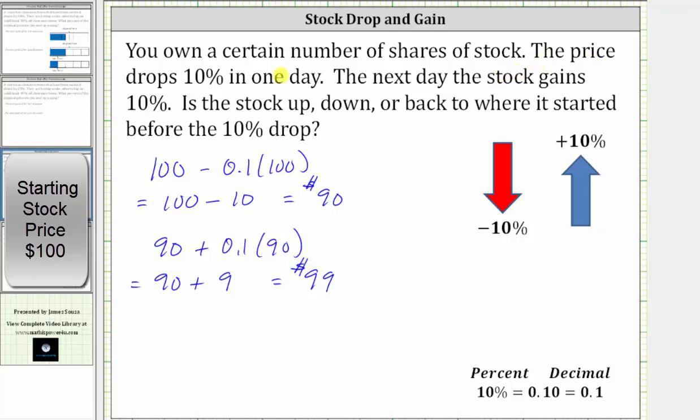So after the drop of 10% and then the subsequent gain of 10%, the stock price is now $99. But remember, it started at $100, and therefore the stock price is still down $1.